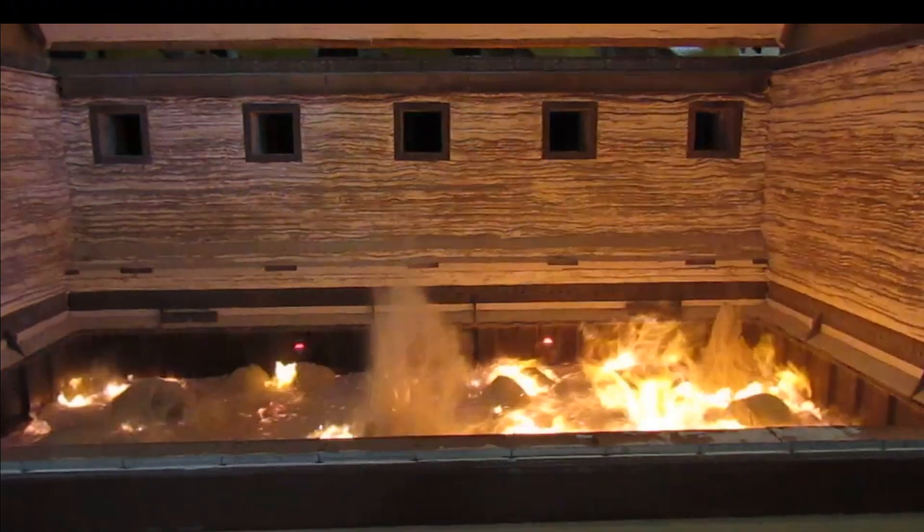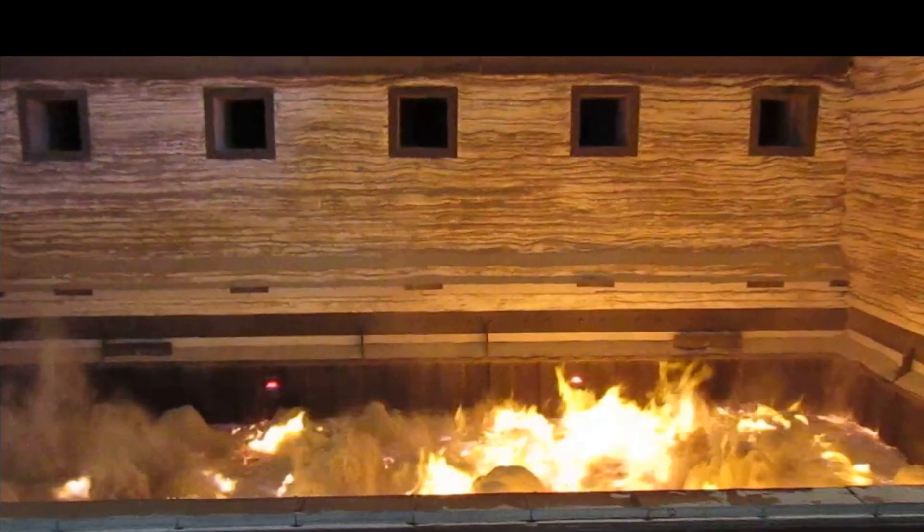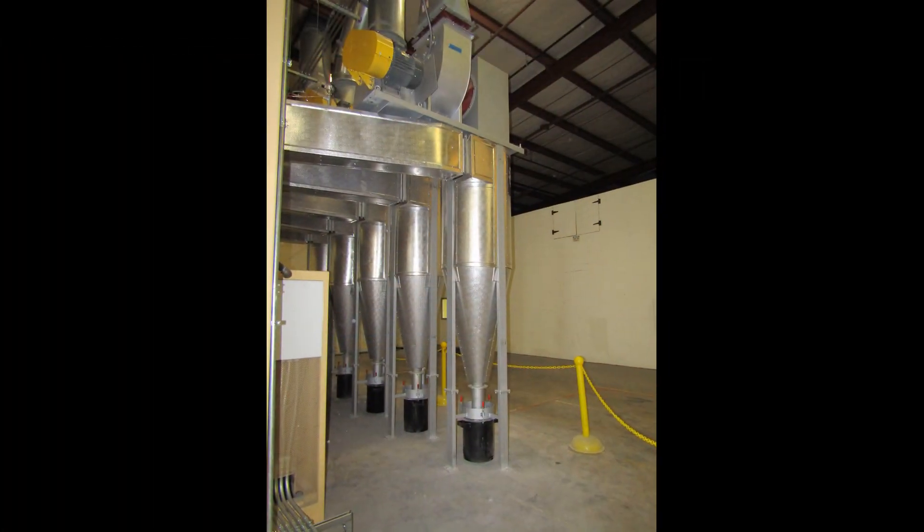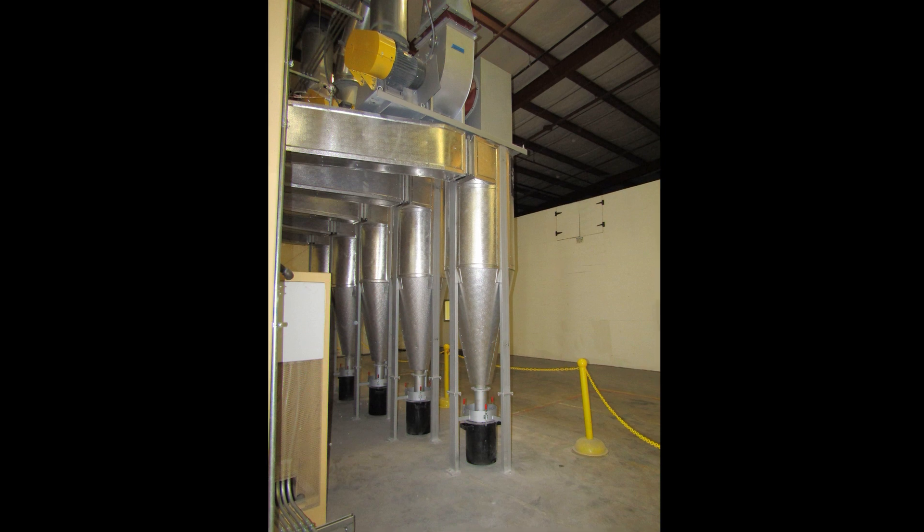As the flue gases and these particles move through the exhaust system, the particles are separated by using a cyclone battery and are collected at the base of the cyclones.